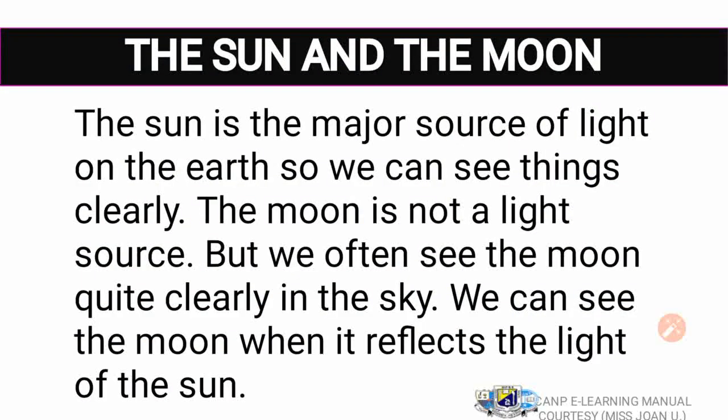All the other things reflect light, because when the light source is off we can't see them, and when the light source is on we do see them. That tells you the importance of light in the concept of seeing and reflection. Let's look at the Sun and the Moon — the Sun is a major source of light on the Earth, so we can see things clearly.